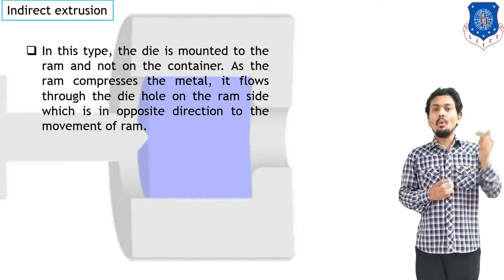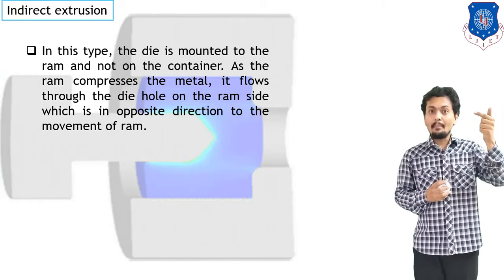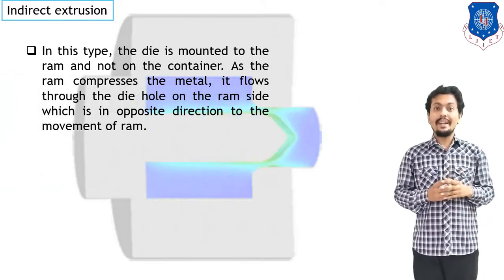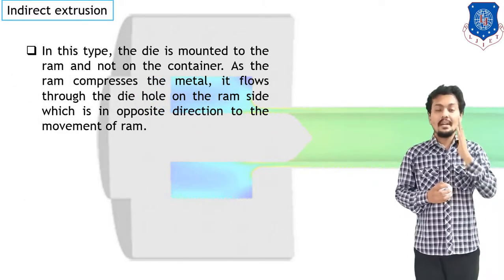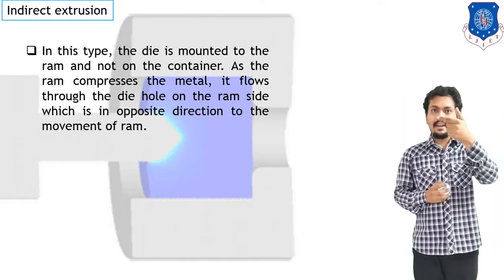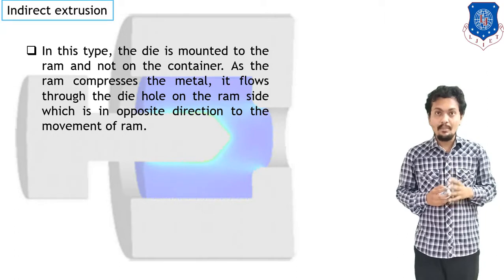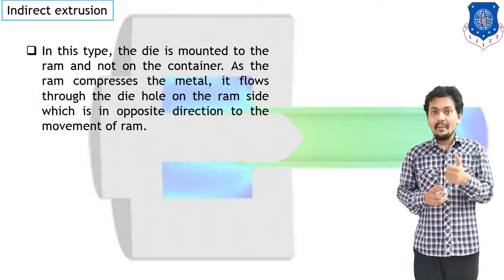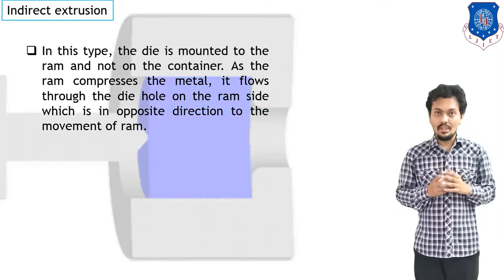In indirect extrusion, when we apply the force in one direction, our material flows in the reverse or opposite direction. When the ram or plunger moves towards the right direction, our matter flows in the left direction — this is known as indirect extrusion. So in extrusion process, material flows through the die, but based on the direction of material travel relative to the applied force, it is classified as direct or indirect extrusion.